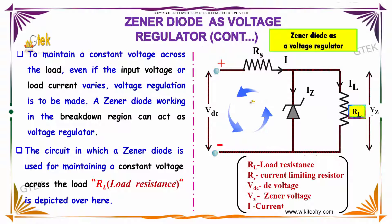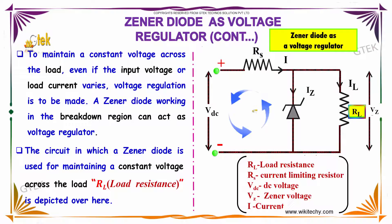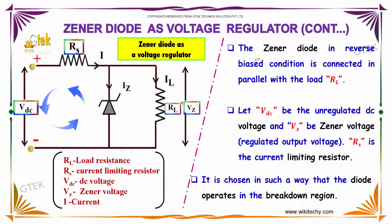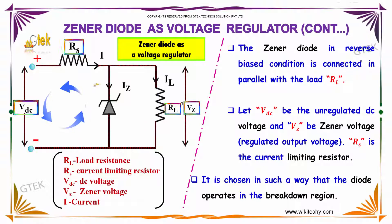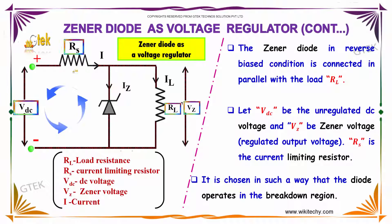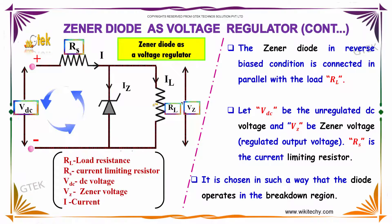The circuit in which a Zener Diode is used for maintaining a constant voltage across the load RL is depicted here. The Zener Diode in reverse biased condition is connected in parallel with the load RL. Let VDC be the unregulated DC voltage and VZ is the Zener voltage, which is called the Regulated Output Voltage. RS is the Current Limiting Resistor, chosen in such a way that the diode operates in the Breakdown Region.